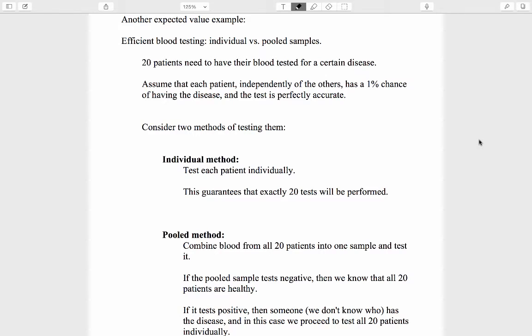Here is another kind of expected value problem that involves the binomial probability model. This is an important practical example having to do with efficient blood testing. The contrast between individual samples and pooled samples.